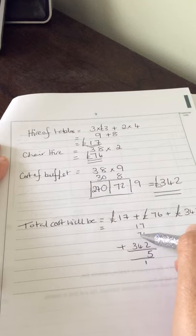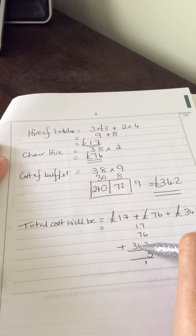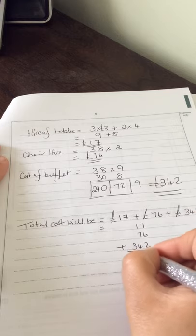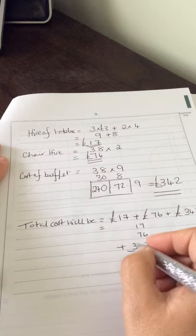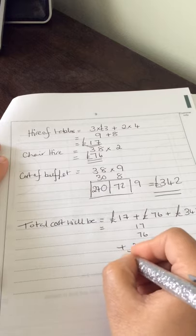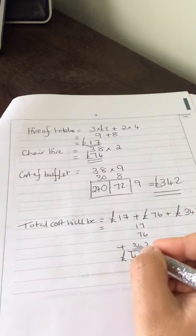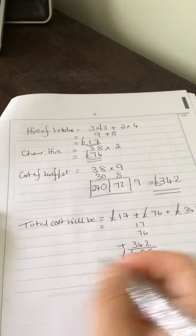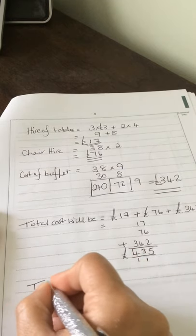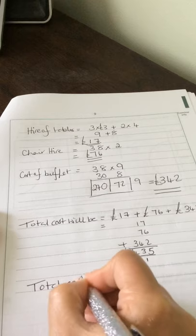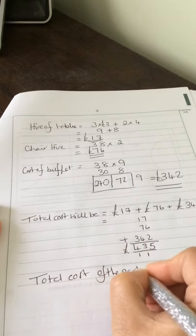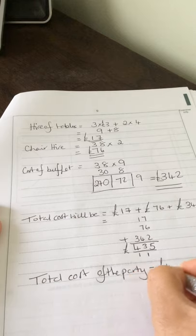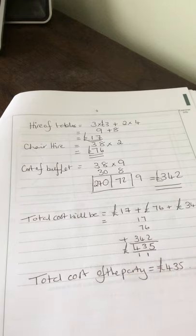One plus seven is eight, plus four is twelve, plus one is thirteen, three down, carry the one, and three plus one is four. So the total cost of the party equals four hundred and thirty-five pounds.